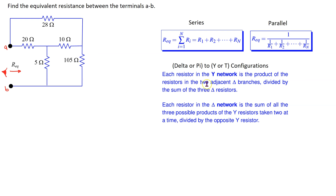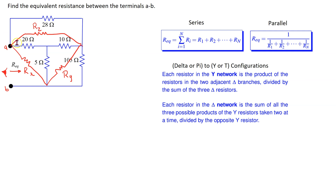So first, let's see how we can apply a Y-to-delta transformation. This Y or T configuration of resistors we can replace with an equivalent delta. Suppose we label these resistors as Rx, Ry, and Rz. The thing to remember is that each resistor in the delta network is the sum of all three possible products of the Y resistors taken two at a time in the numerator.